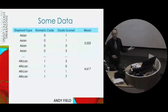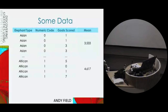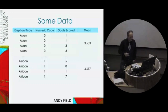I've got some data like this. We've got a group of Asian elephants and a group of African elephants — 60 of each. Across the whole season, I measured how many goals they scored. This Asian elephant only scored one goal over the whole season — he was probably a defender. So I've got lots and lots of scores of how many goals they scored.